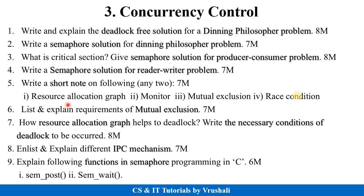The next question is: write a short note on the following — terms like resource allocation graph, monitor, mutual exclusion, or race condition. They will ask either that or: list and explain requirements of mutual exclusion for 7 marks. Prepare mutual exclusion completely. The next question is: how does the resource allocation graph help with deadlock, and write the necessary conditions for deadlock to occur, for 8 marks. Also: list and explain IPC (inter-process communication) mechanisms for 7 marks, and explain semaphore functions like sem_post and sem_wait with examples. Prepare dining philosopher, producer-consumer, reader-writer, mutual exclusion, and all parts of deadlock including avoidance, necessary conditions, and prevention techniques.